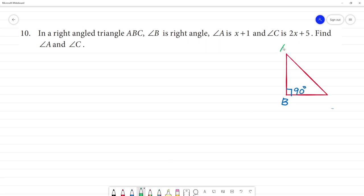Angle A is x plus 1. Angle C is 2x plus 5. So, we need to find angle A and angle C.